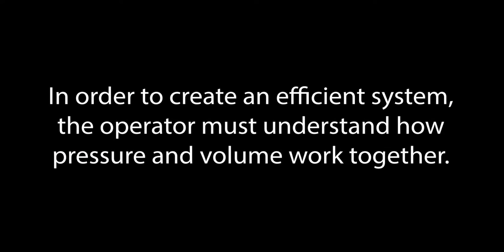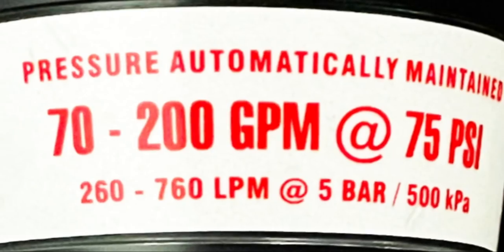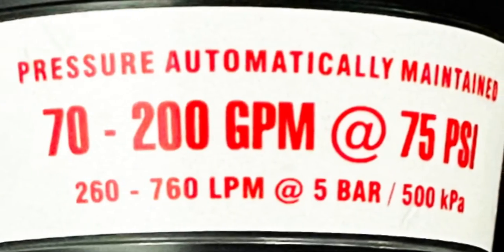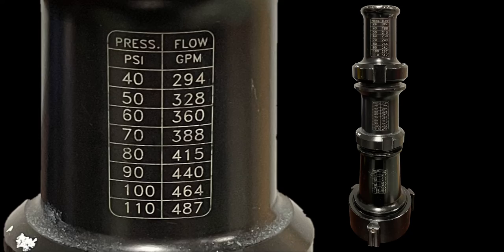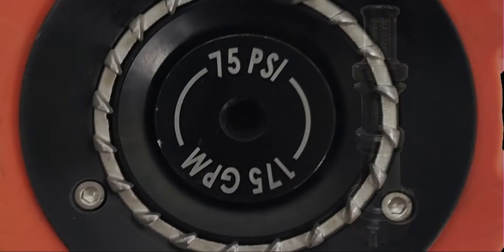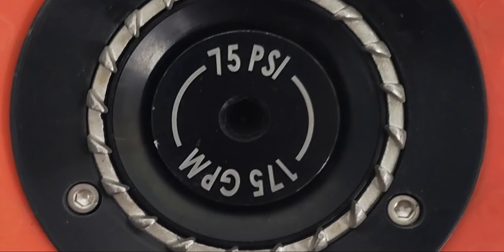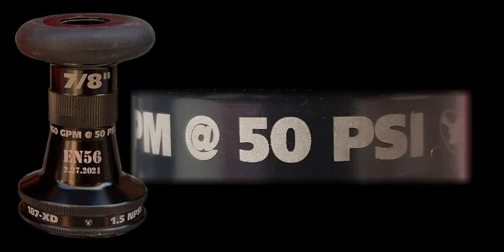In order for the engineer to create an efficient system, they must understand how these two factors work together to move water through their system. First and foremost, they must have a thorough working knowledge of the volume capacities of the nozzles carried on their apparatus, as well as the pressure requirements for moving that volume of water through the system.